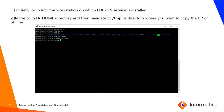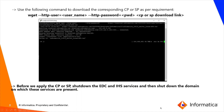The first step to install any CP or SP is to log into the workstation where the EDC or ICA service is installed, then move to the home directory and navigate to the /tmp directory. This is where we download our CP or SP files. We use the wget command with authenticated user credentials along with the CP or SP download link. Make sure the SP or CP being downloaded matches the existing EDC instance version.